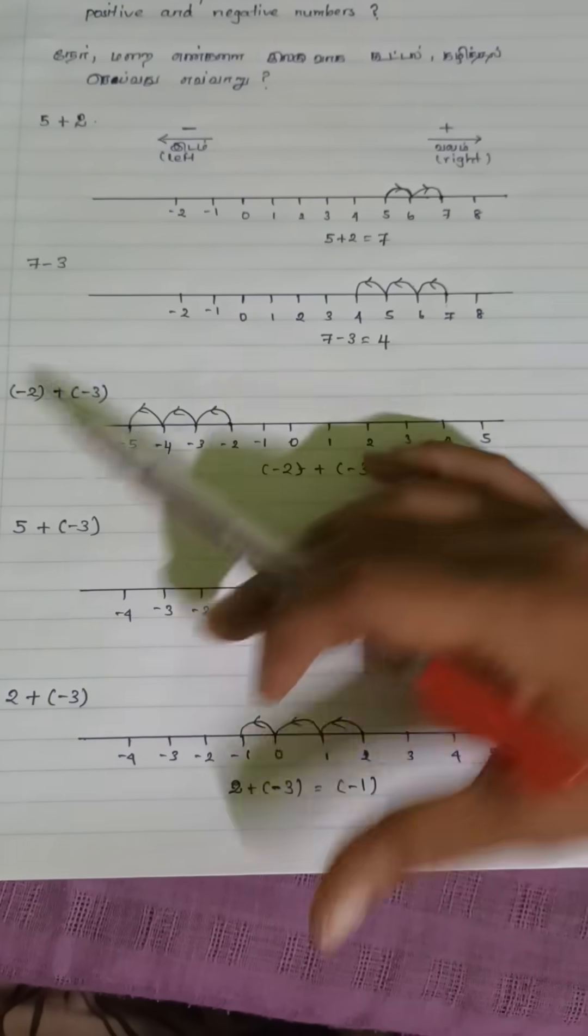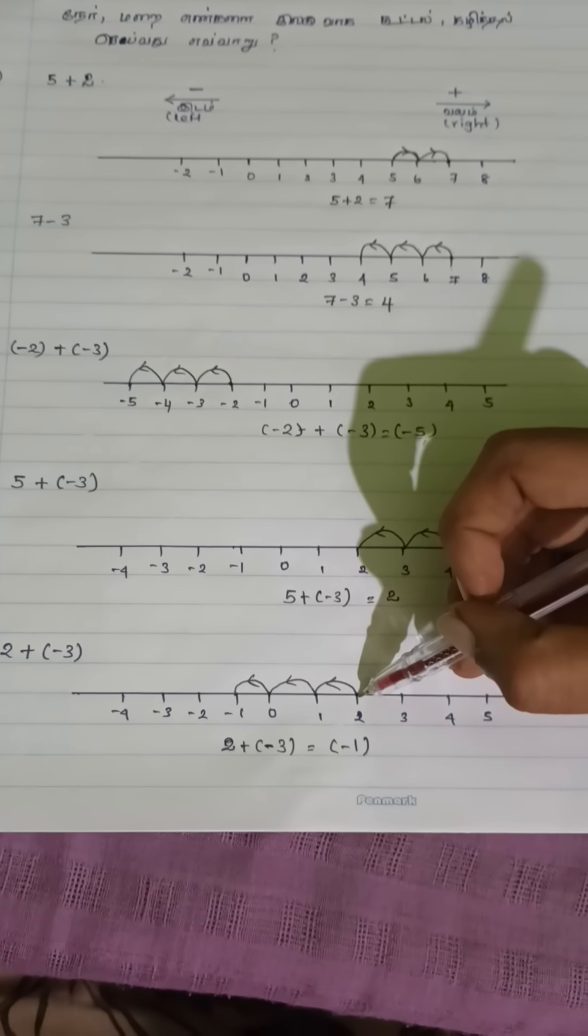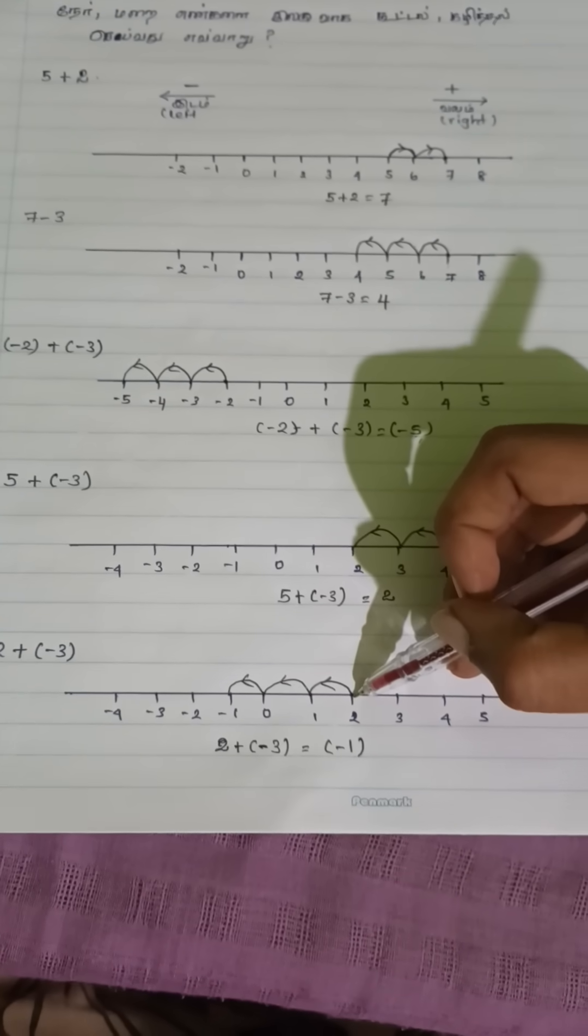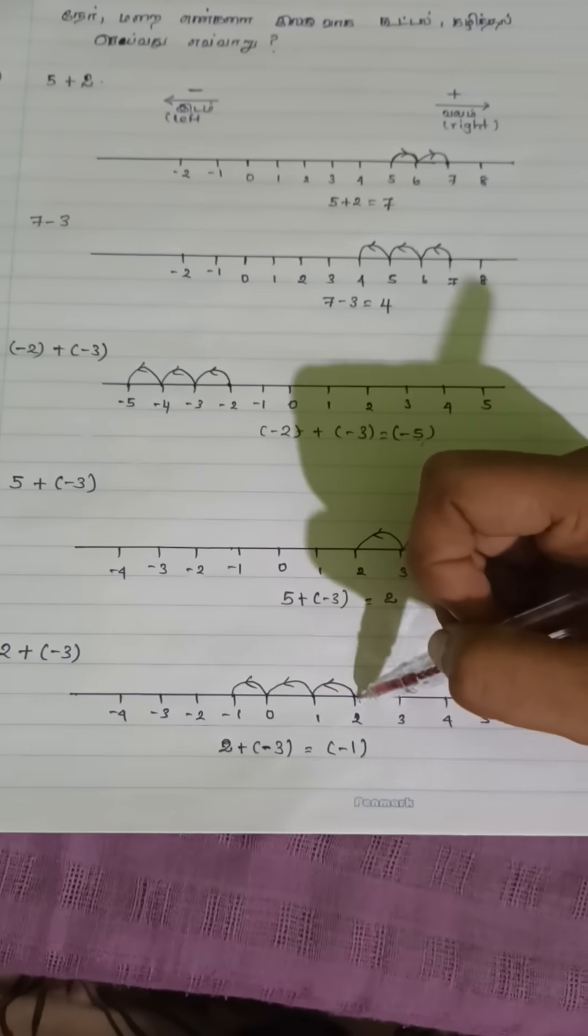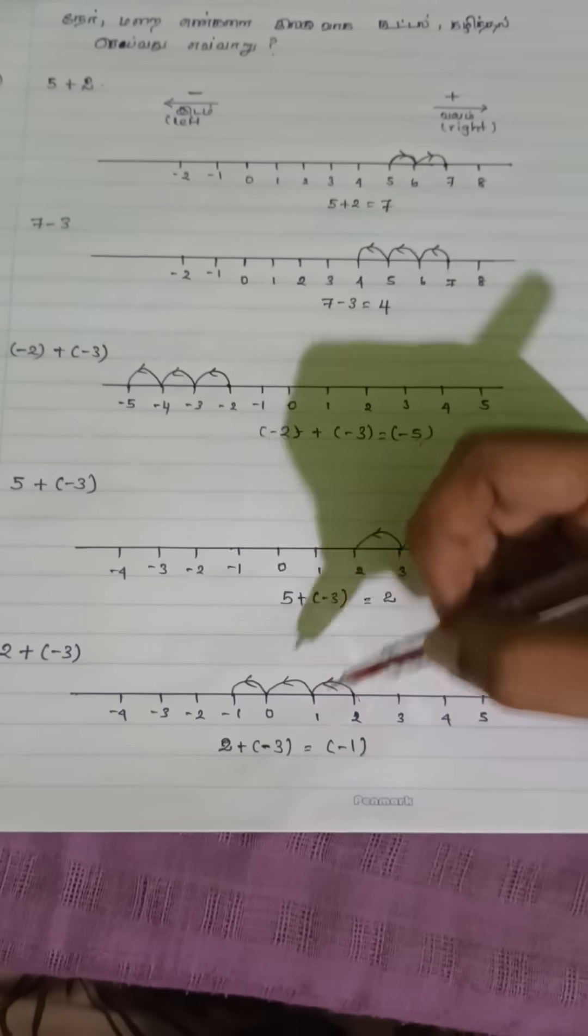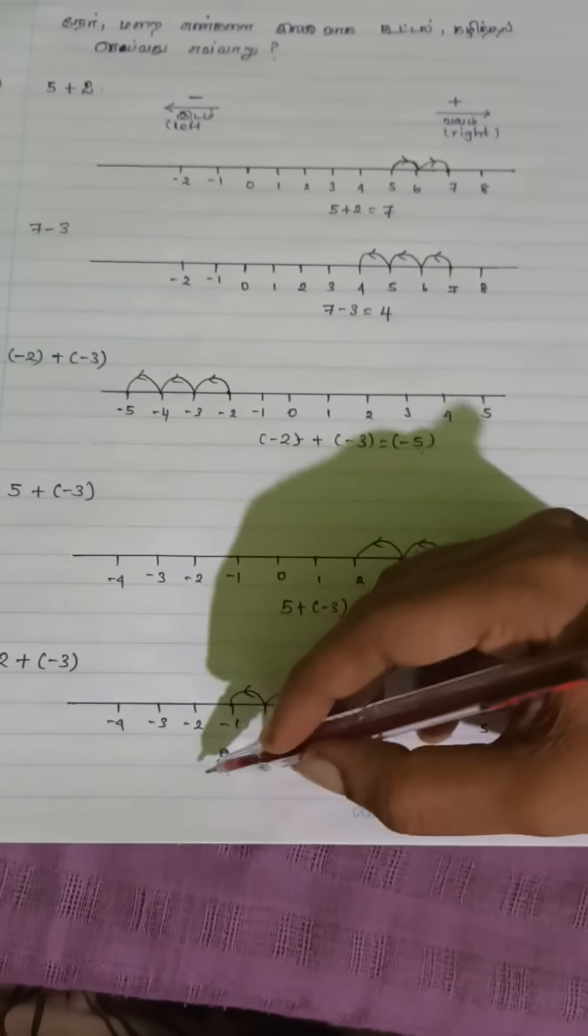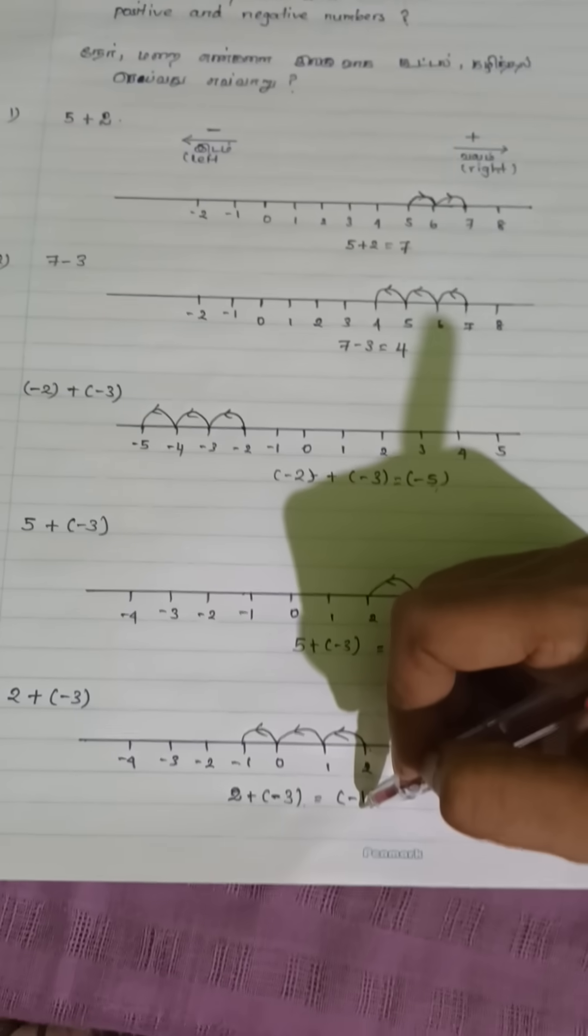2 plus minus 3. Same way. You start at 2 on the number line. Next minus 3, so you step 3 steps to the left side. You land on minus 1. 2 plus minus 3 equals minus 1.